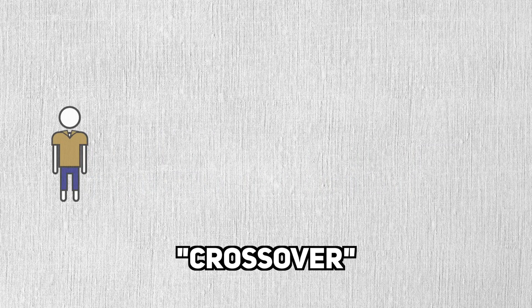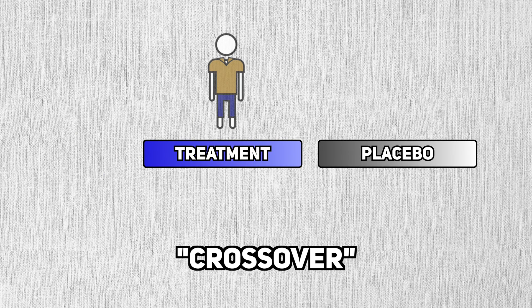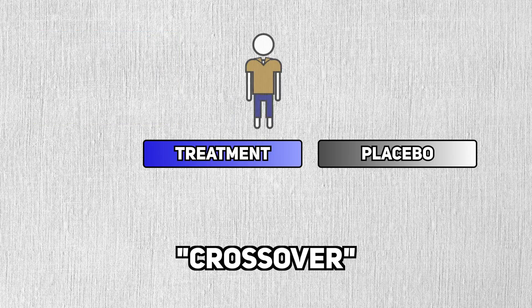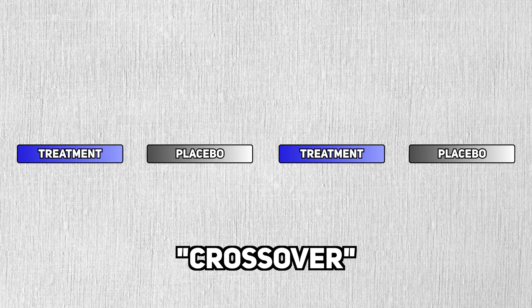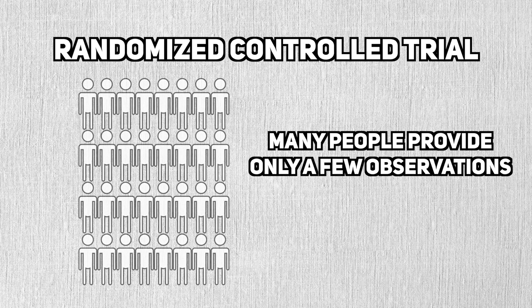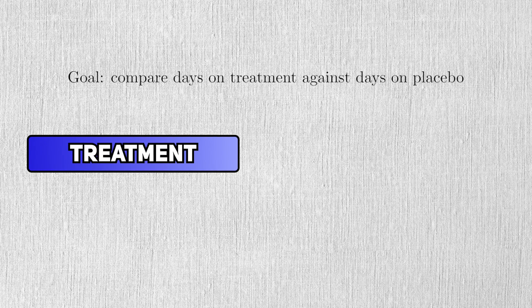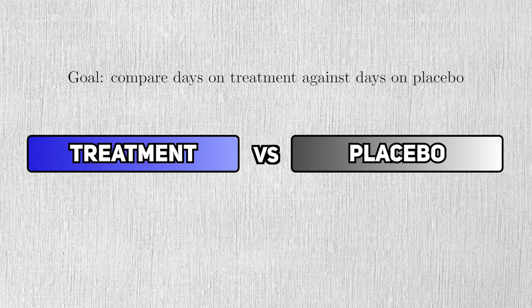N of 1 trials work because they use crossover between an active treatment and a placebo. A person will start with one treatment, spend some amount of time on it, and then switch over to the other treatment. And this process repeats however long is needed. In an RCT, many people provide only one observation. But in an N of 1 trial, one person produces many over time. They act as their own control. We just need to see the difference between the days where they take the active treatment and the days where they weren't.